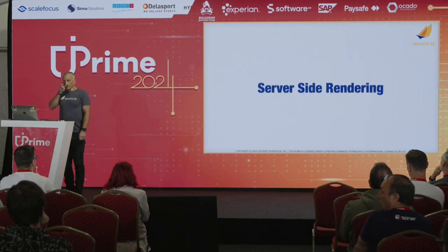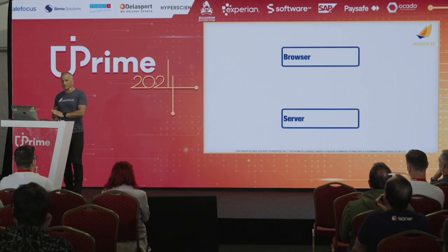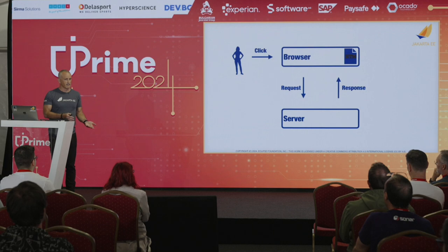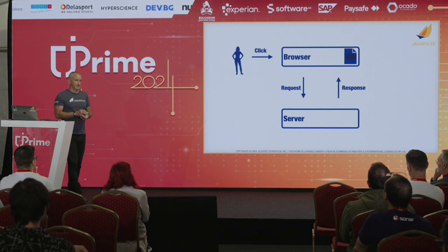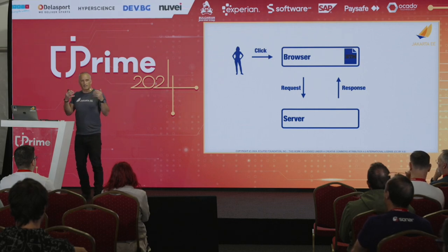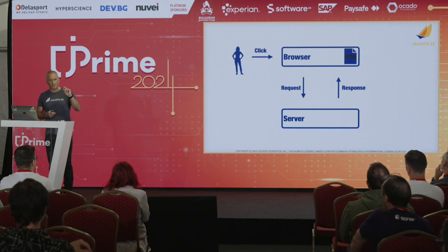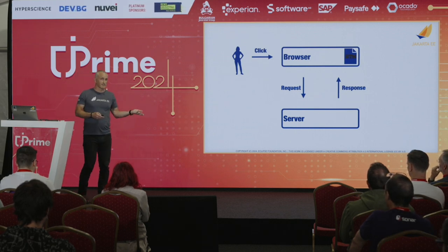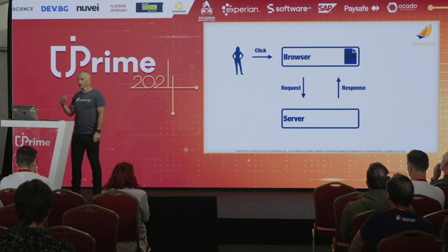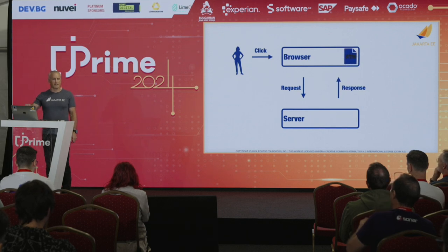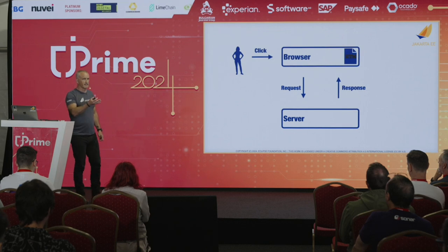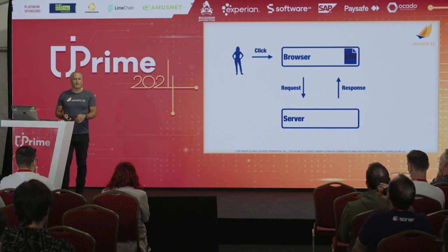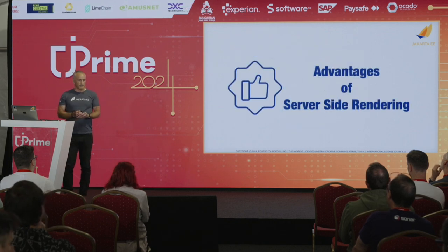With server-side rendering, the user clicks in the browser, a request goes to the server, and some HTML is rendered and sent to the client. It's a smaller page so it's faster to load — the first initial load is very quick, and the page may even be pre-rendered, so it's immediately there. But subsequent requests are the same speed because everything is rendered on the server, so every time you request something new it's rendered server-side and returned to the browser — it may be a little laggier for interactions.